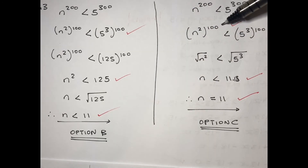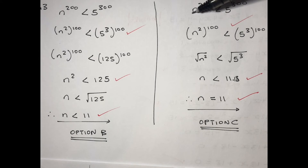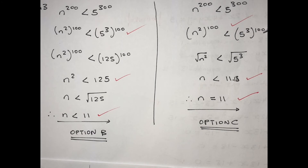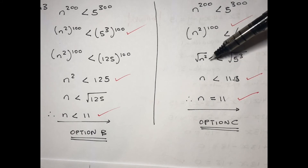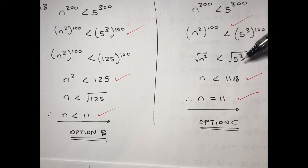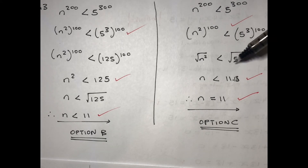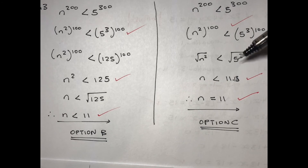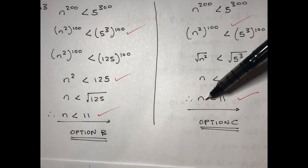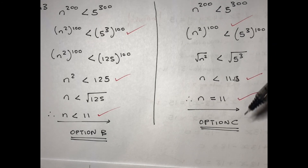Option C: you can also write n to the power 2 times 100 and 5 to the power 3 times 100, then introduce a square root to remove the n squared. You do the same on the other side — introduce a square root on 5 to the power 3 — and you remain with n less than 11.18, so n equals 11.